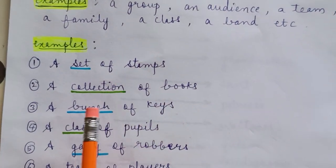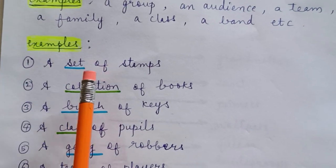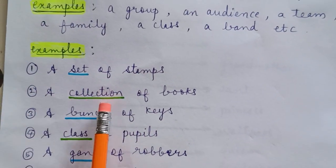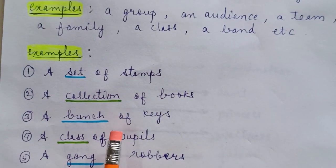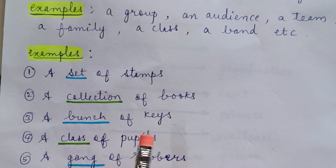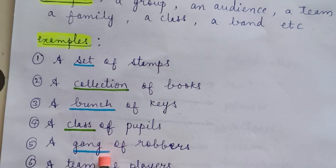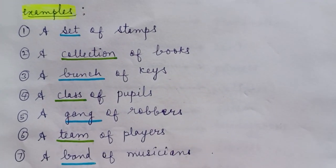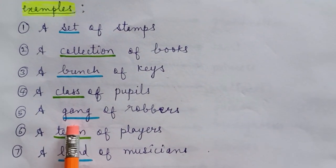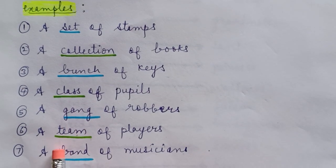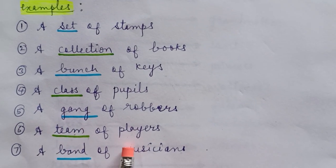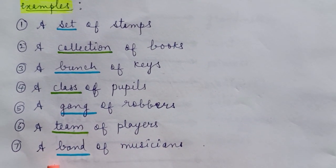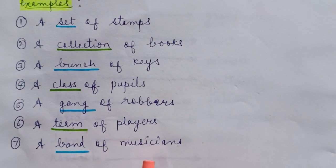See some examples. A set of stamps. A collection of books. A bunch of keys. A class of pupils. A gang of robbers. A team of players. A band of musicians.